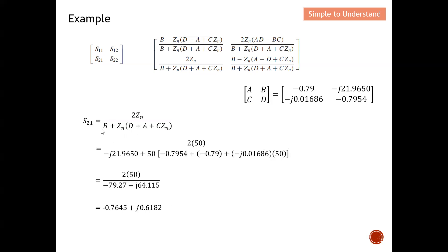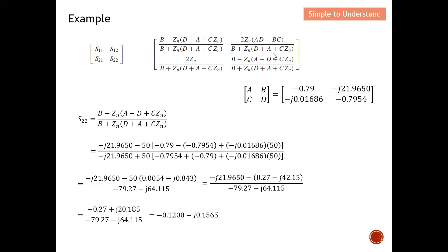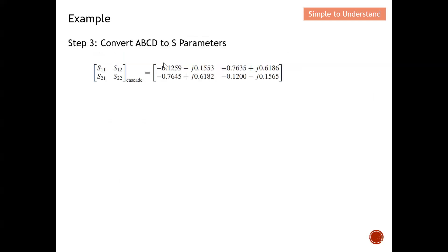For S21, it is similarly 2 times 50 over the same denominator, giving the overall S21 value. For S22, the value is computed using the same denominator, and I obtain S22 from the overall ABCD parameters. I have successfully converted the ABCD parameters into S-parameters — first calculating the overall ABCD parameters, then converting them to give the final S-parameter answer for the via and transmission line connected together.